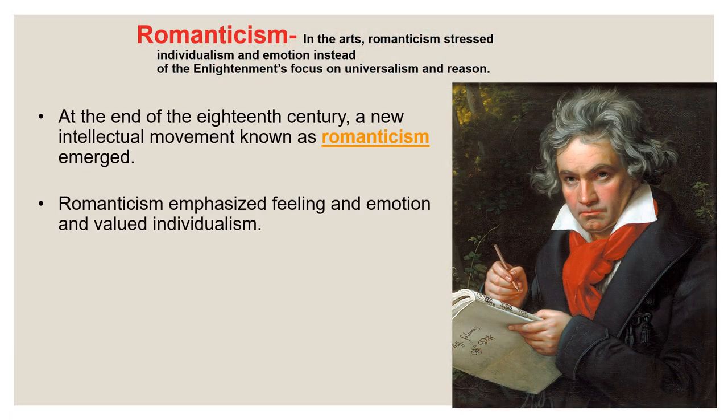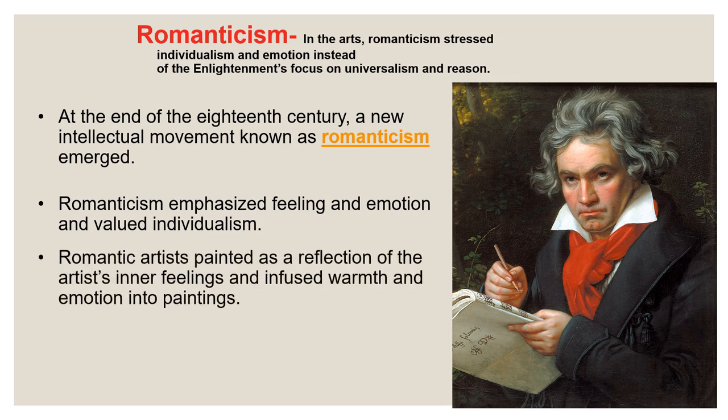First, we start with Romanticism. In the arts, Romanticism stressed individualism and emotion, instead of the Enlightenment's focus on universalism and reason. The Romantic movement is an artistic and intellectual movement that is basically a reaction against the age of reason. It's a reaction against too much science and the idea that too much science had created ugliness in society with the Industrial Revolution and the problems that came along with it.